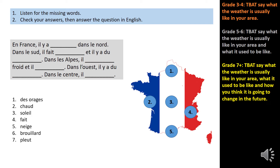Now have a go at this reading exercise. Look at the map — what is the weather like in the areas shown on the map? What's the weather like in the north? Number one. In the west? Number two. Etc. So pause the video, and then when you've completed the exercise, carry on for the answers.